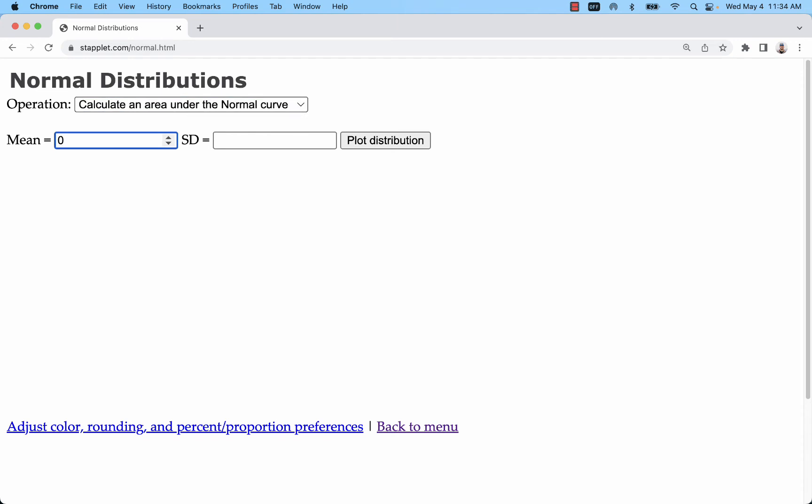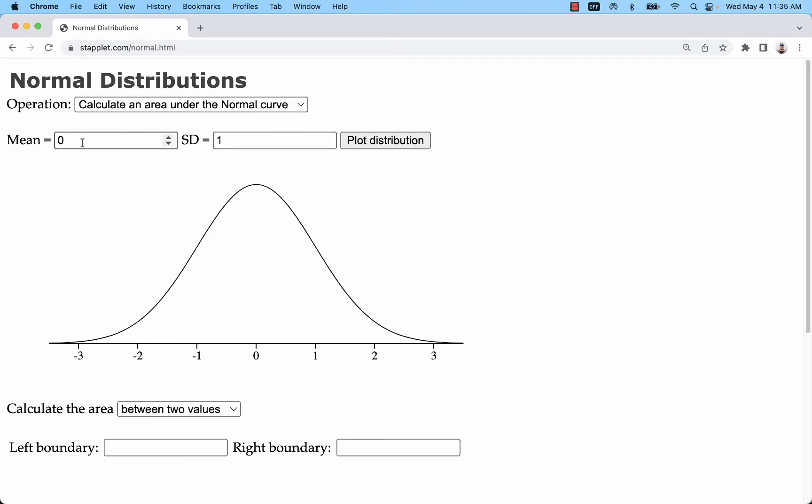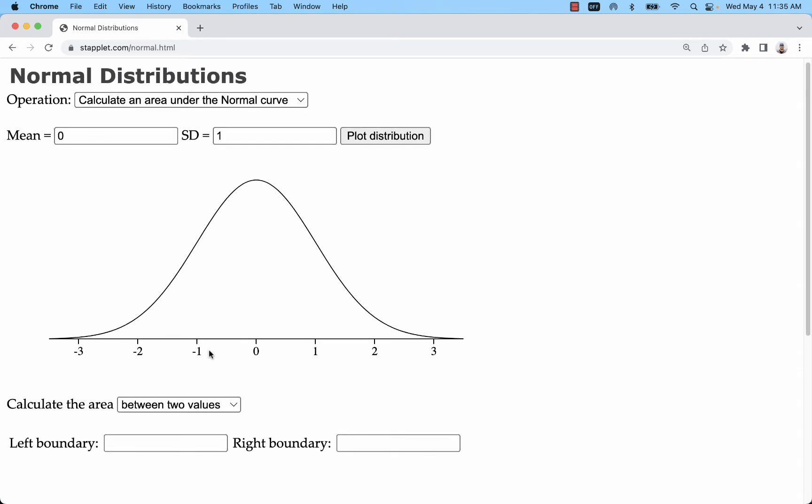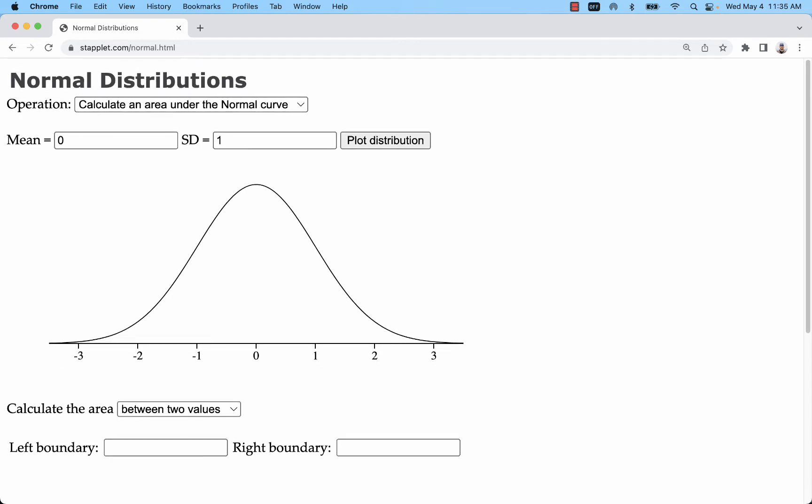Let's start with just a mean of 0, a standard deviation of 1, and just the default, calculate the area under the curve. When I have a mean of 0 and a standard deviation of 1, I'm really looking at a z-axis. This is called the standard normal distribution.